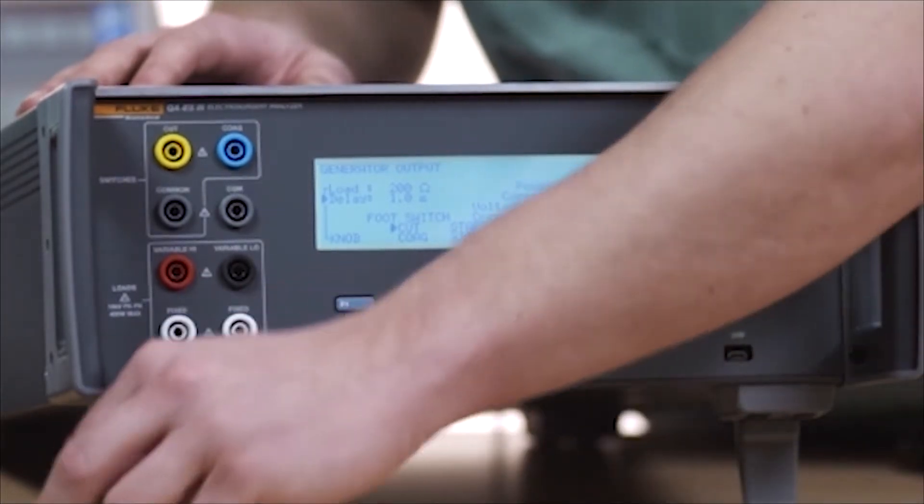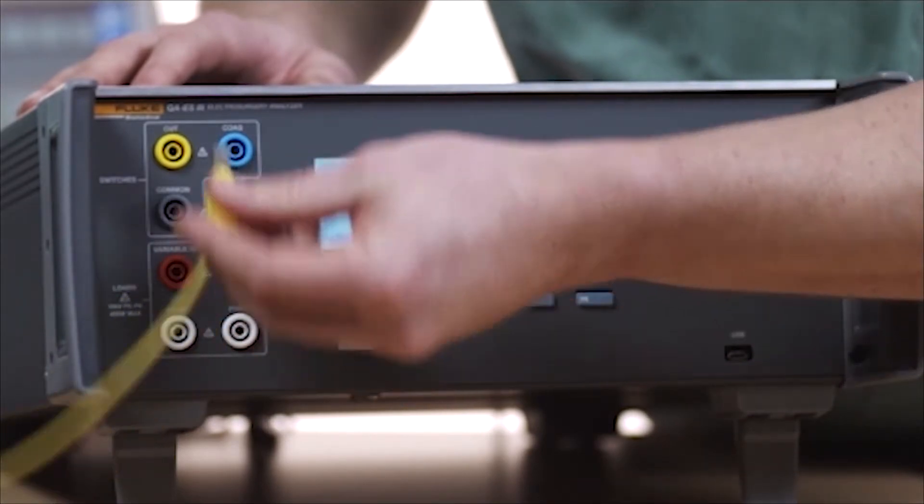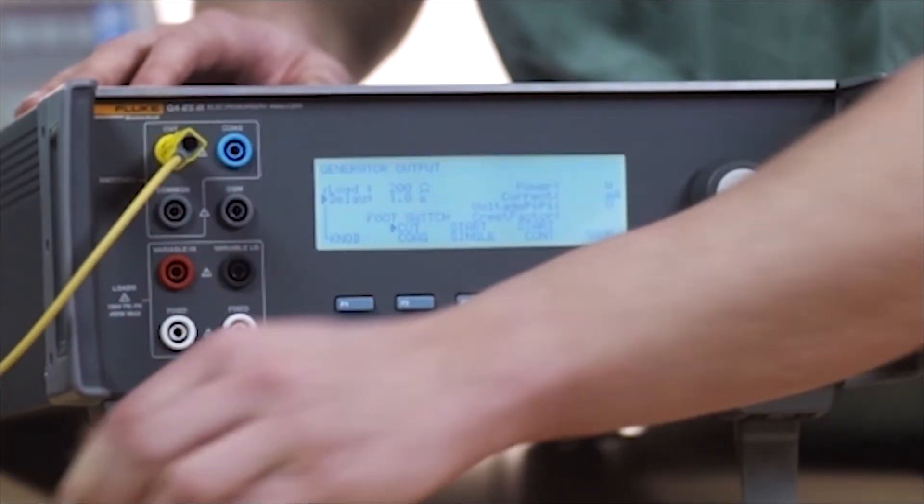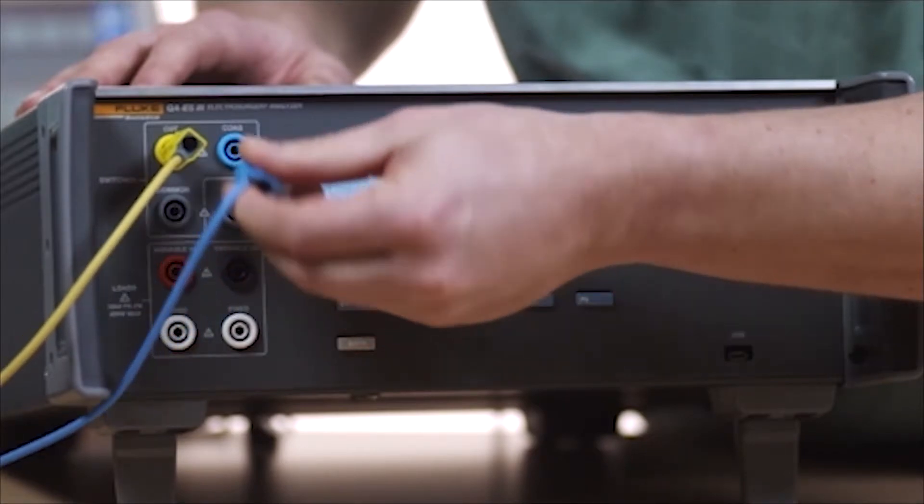Connect the footswitch. Plug the ESU cut switch into the cut jack and the ESU coag switch into the coag jack.